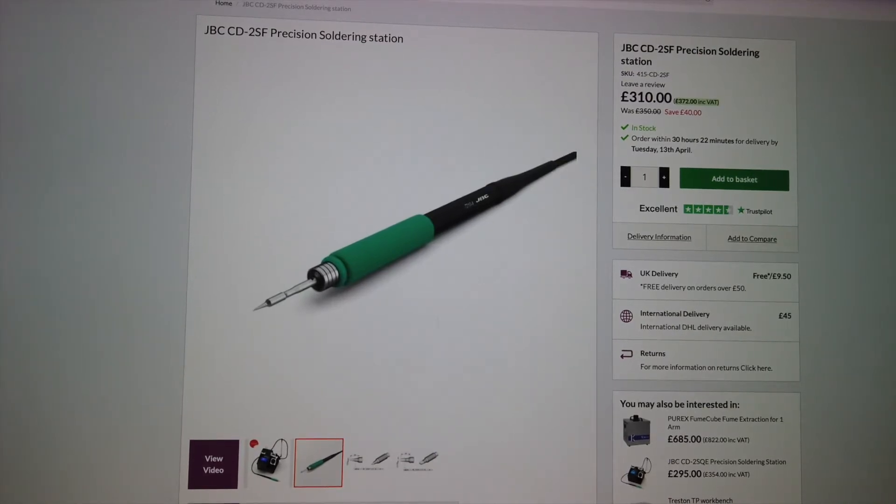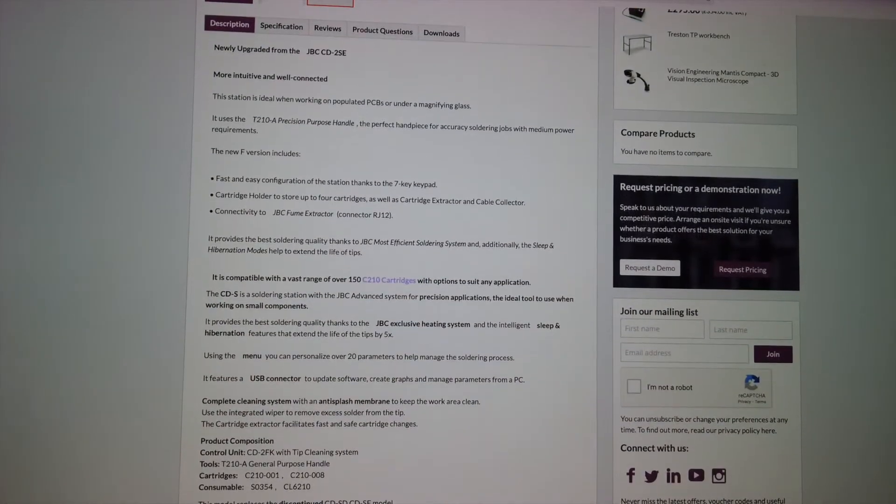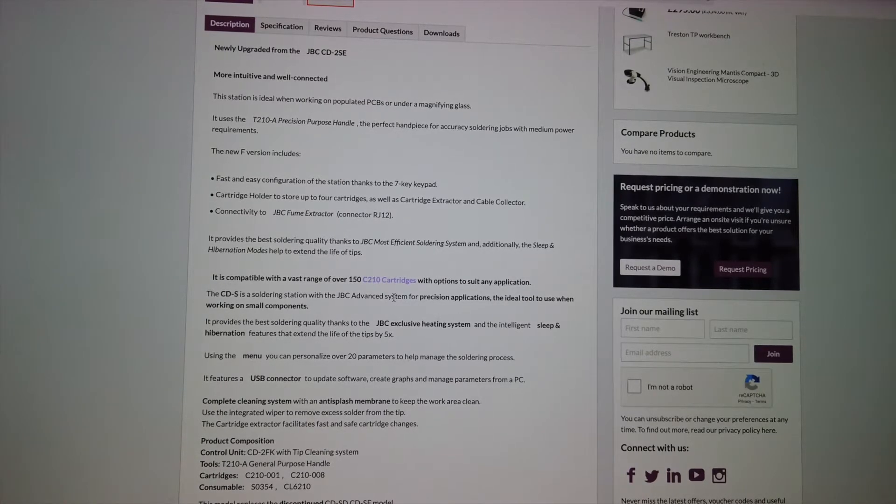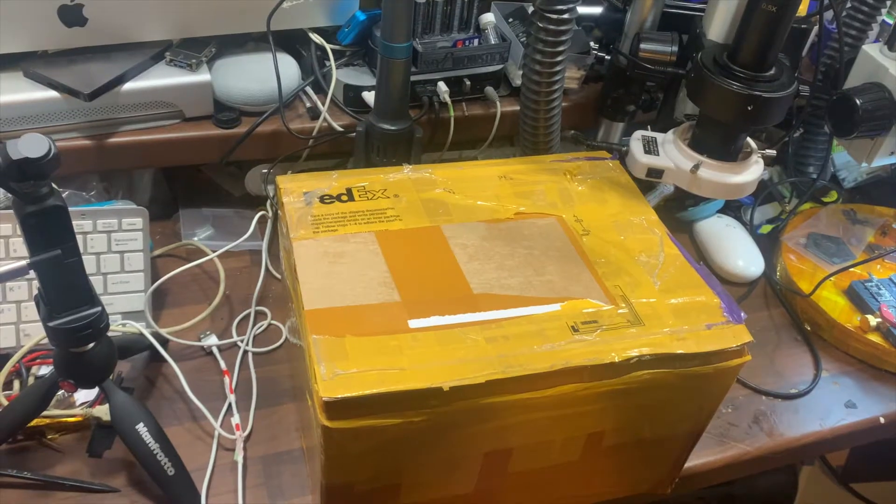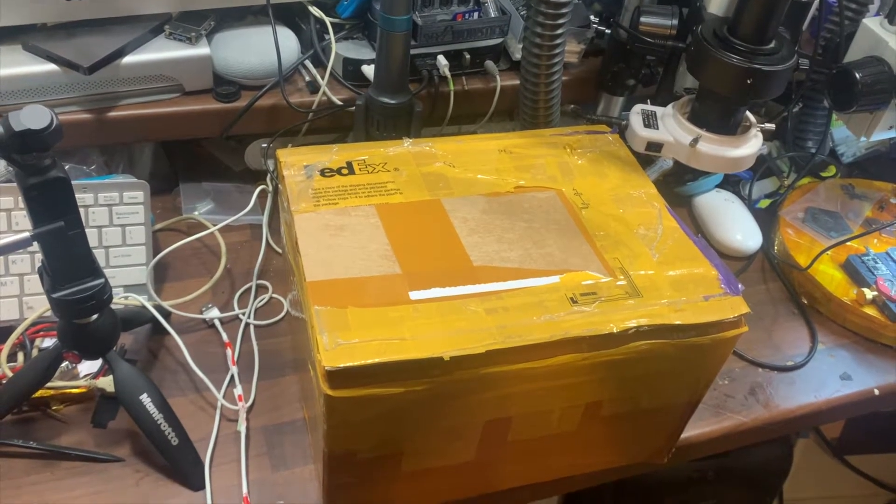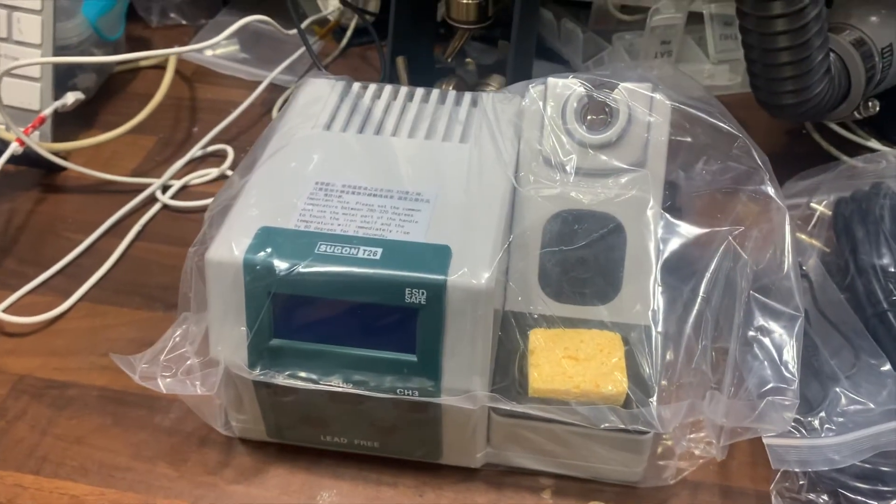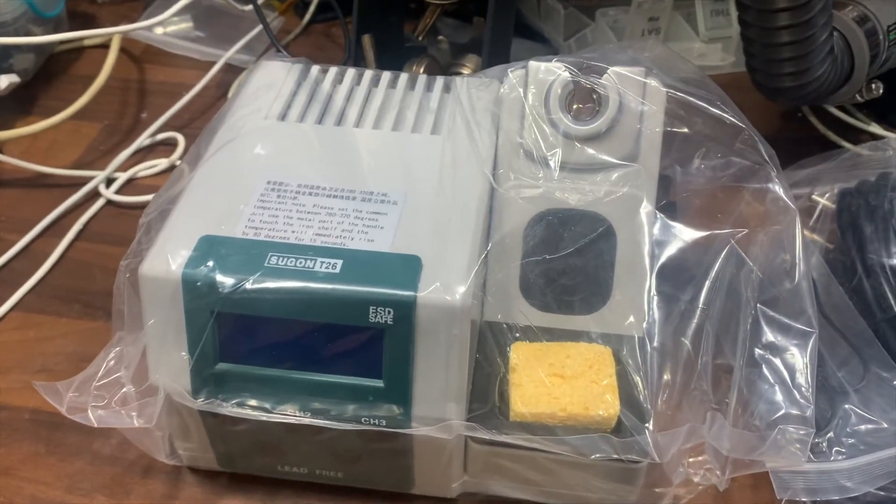It uses the T210 soldering iron and takes the C210 soldering cartridge tips. It is a decent station, very popular. In this video I'm going to show you there's cheaper alternatives out there. Here it is, all the way from China. It's made by Sugon and it's called the Sugon T26 soldering station.